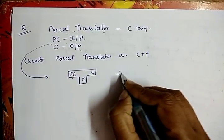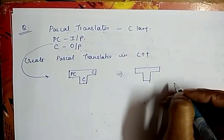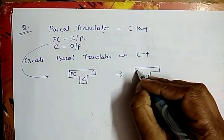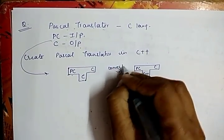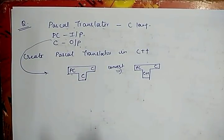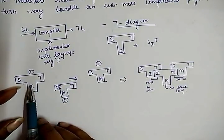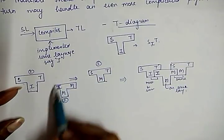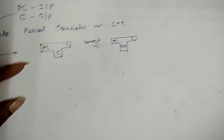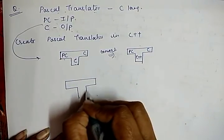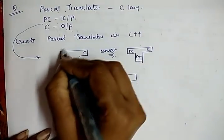We have to convert this C language into C++. First, I represent the given thing as a T-diagram: Pascal code as input, C code as output, Pascal translator written in C language. Now, what we want is a Pascal translator written in C++ that takes Pascal code as input and converts it to C code as output. With bootstrapping, we create three T-diagrams.